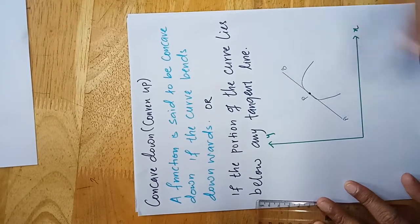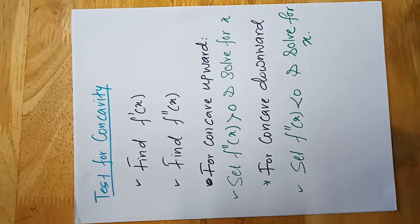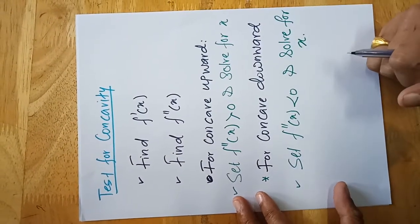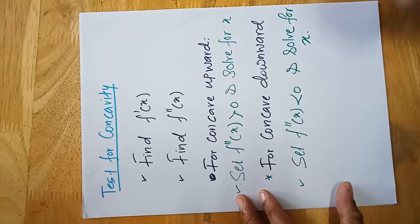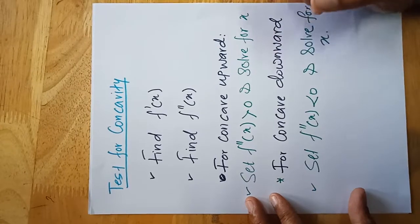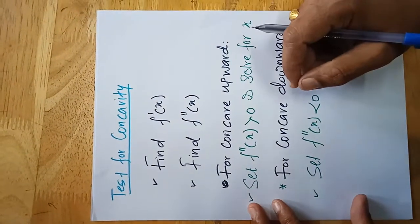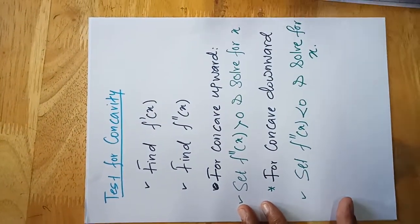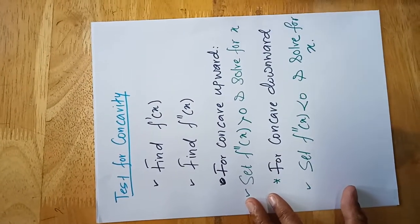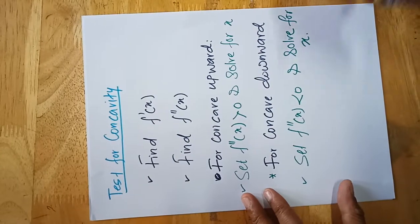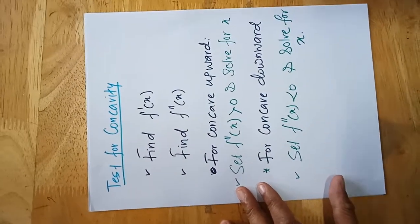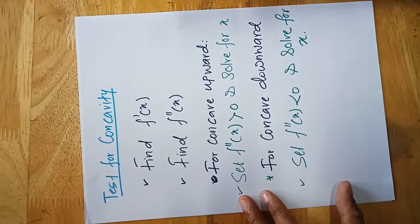In the previous topics we studied the first derivative, which tells you whether a function is increasing or decreasing. But the first derivative does not go further. Now we have to look at the second derivative to determine whether the function is concave up or concave down.